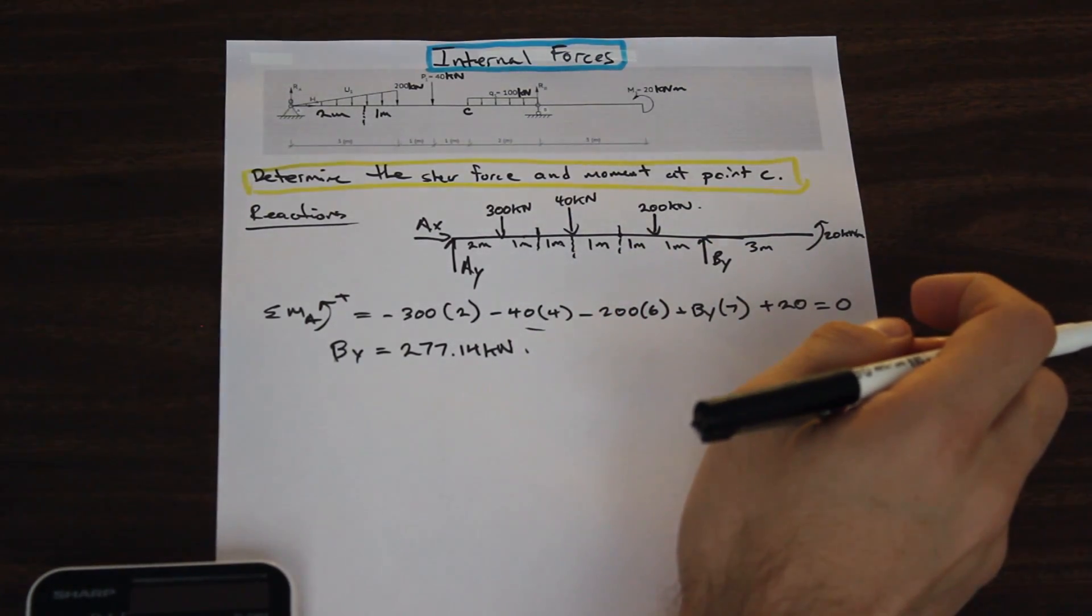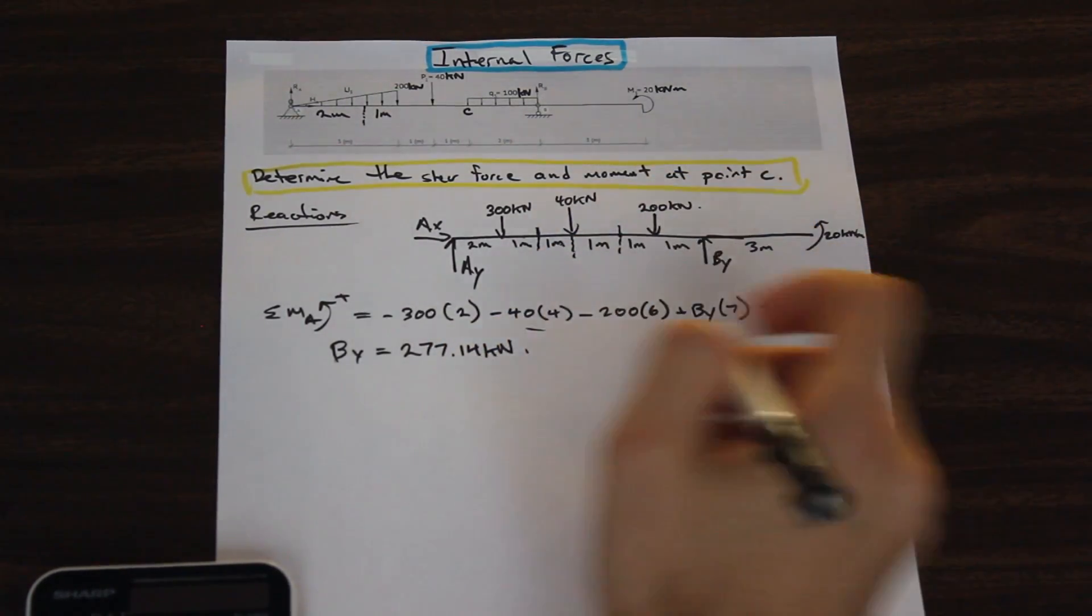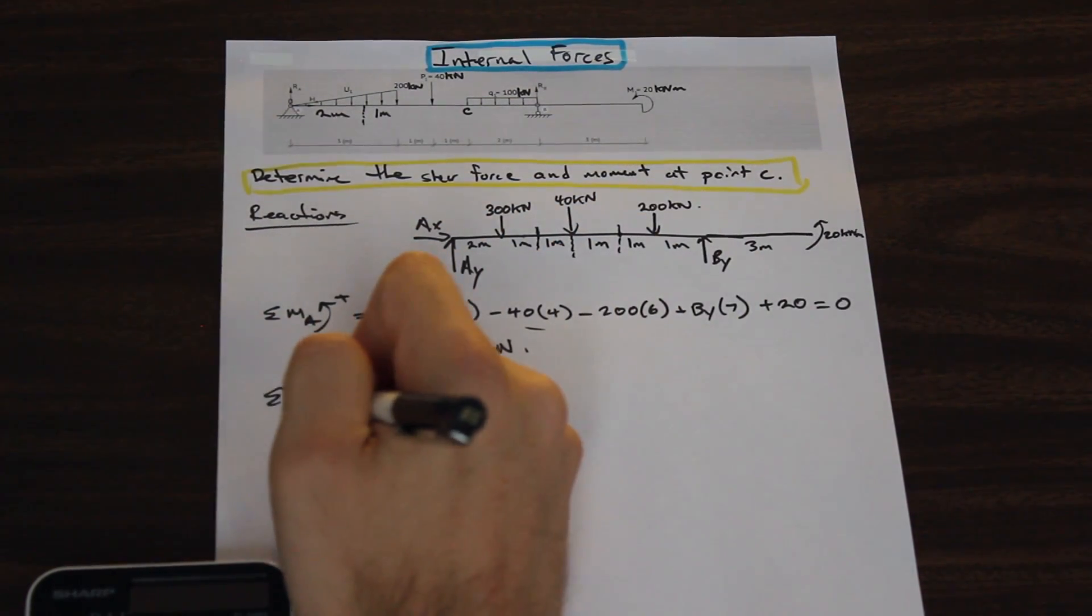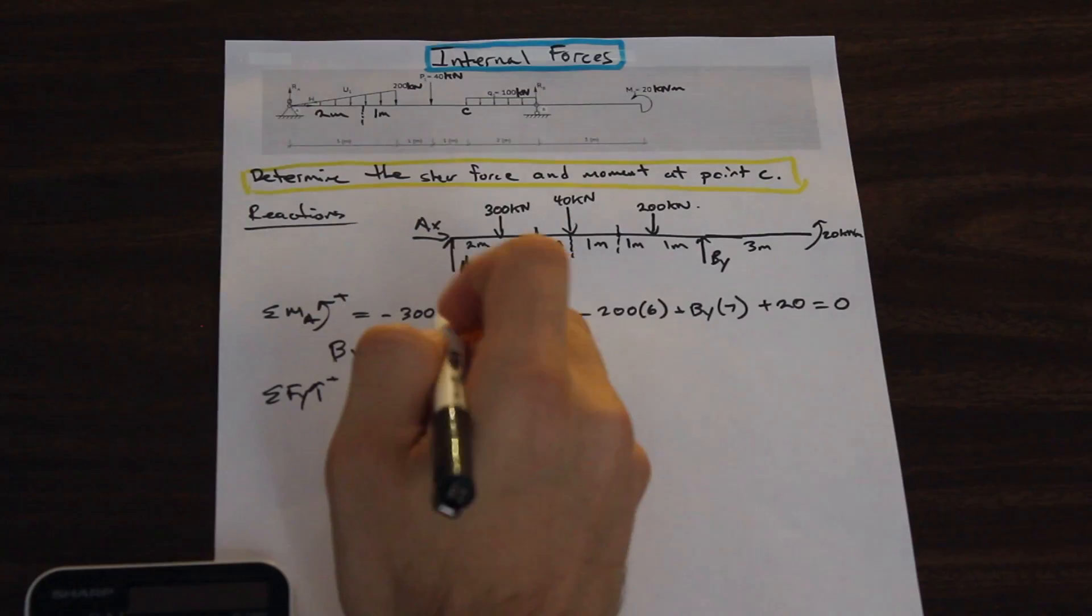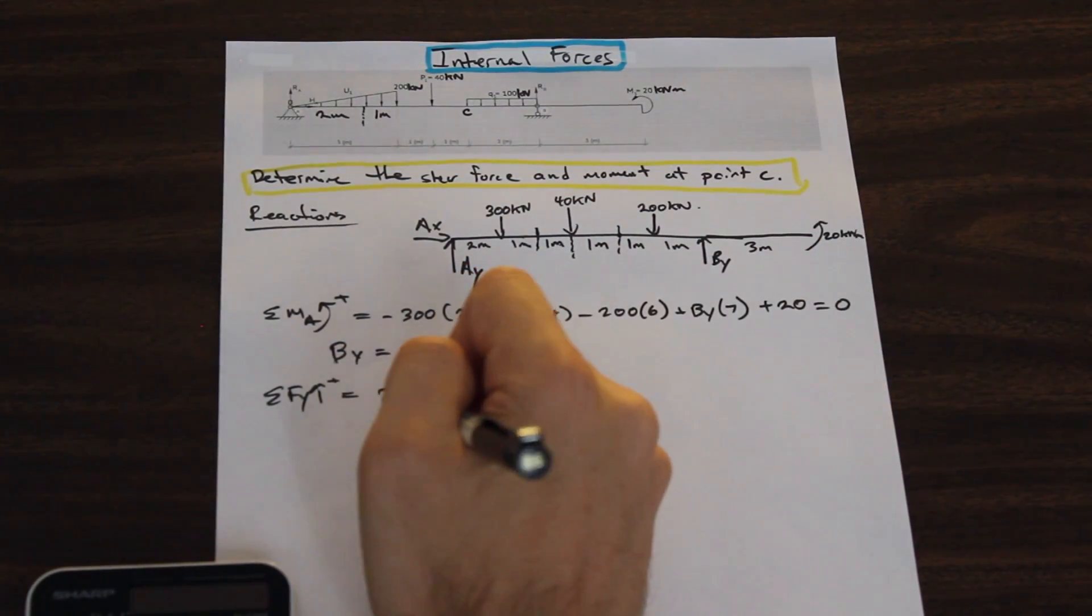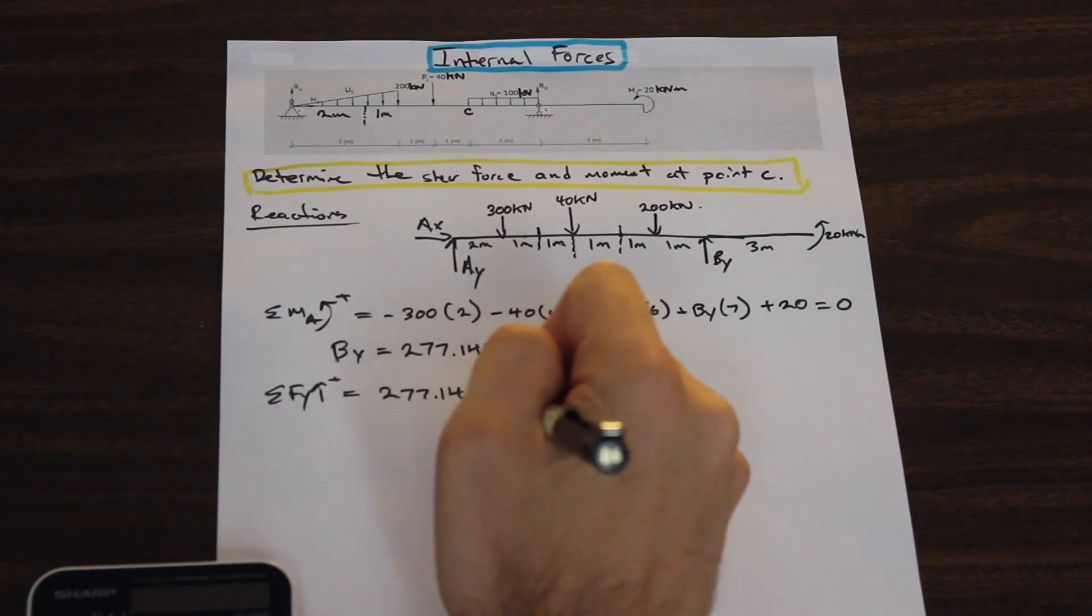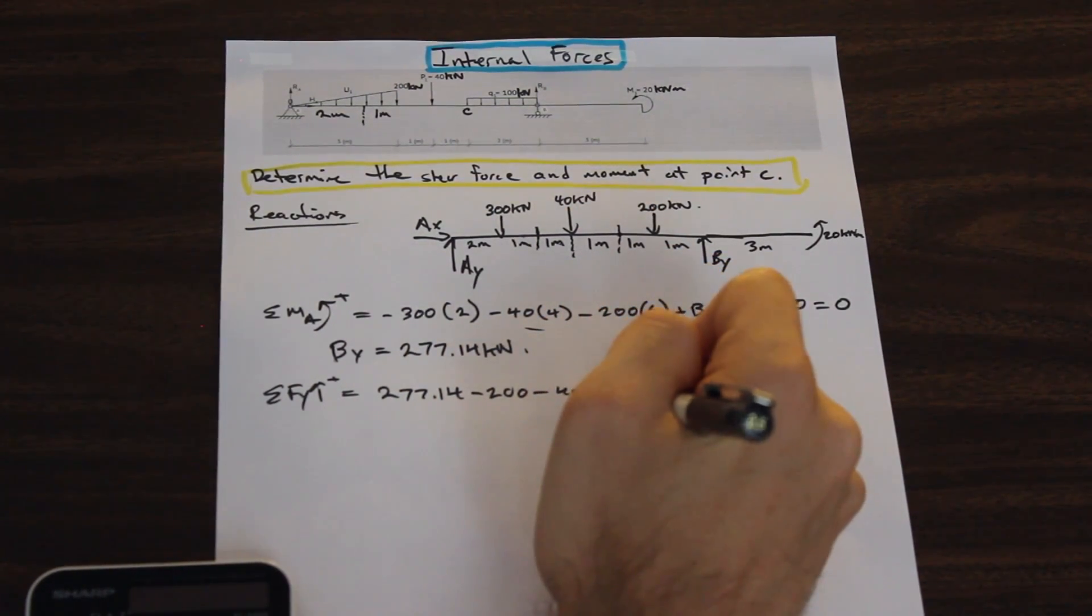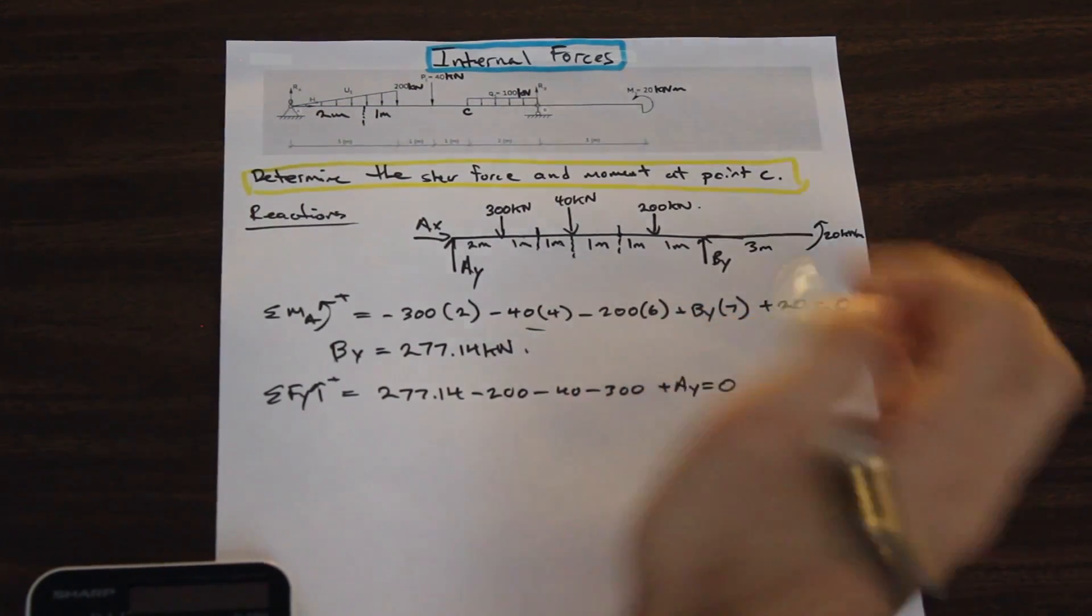Cool. And let's solve for AY. So let's take the forces in the Y direction. We'll say up is positive. So what do we have here? We have BY. So we have 277.14 minus 200 minus 40 minus 300 plus AY equals 0.